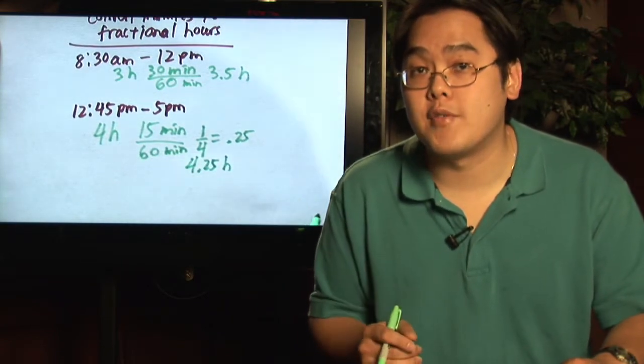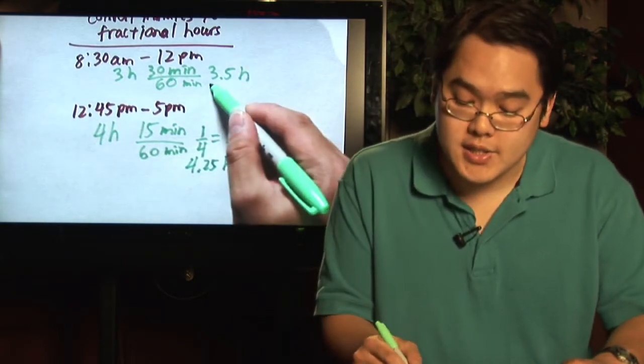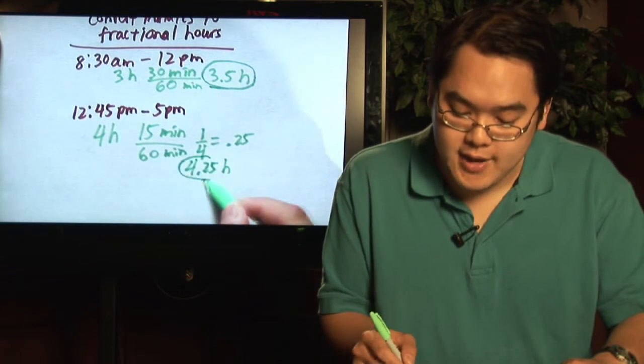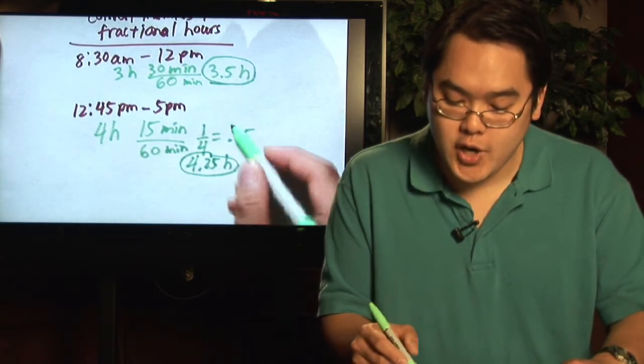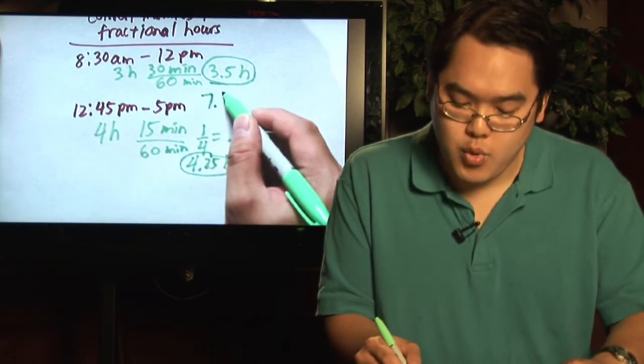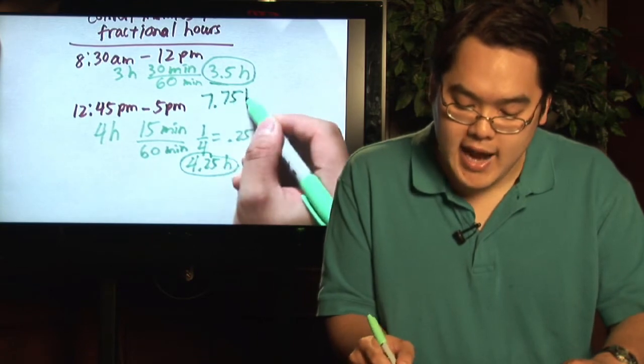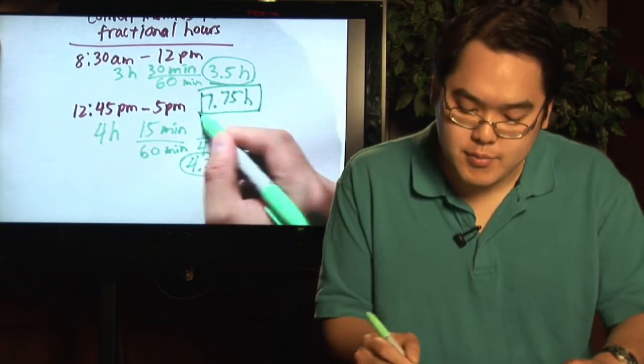All you have to do to figure out the total number of hours worked on that particular day is take 3.5 and add 4.25, and you'll get a grand total of 7.75 hours worked on that particular day.